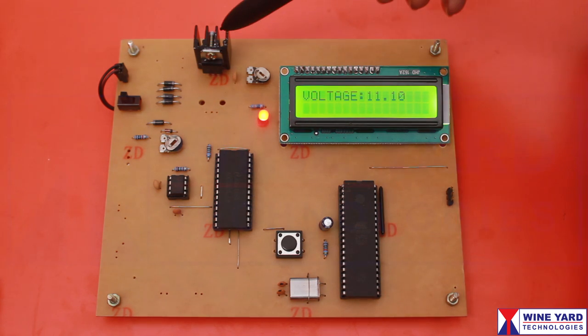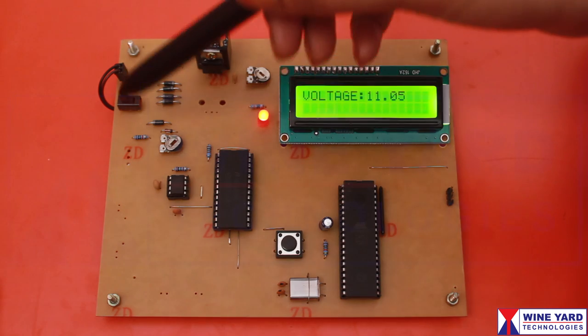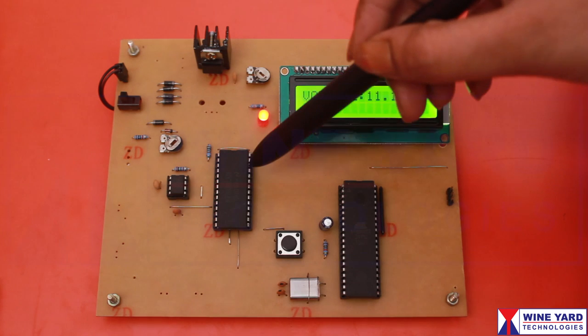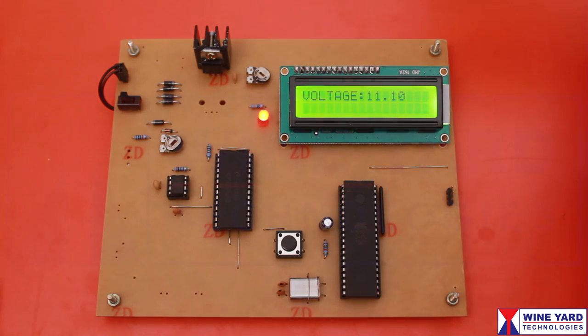This 7805 voltage regulator supplies 5 volts to all the sections. We are using this ADC to measure the battery voltage and display it on LCD. You can adjust display contrast of this LCD by varying this preset.